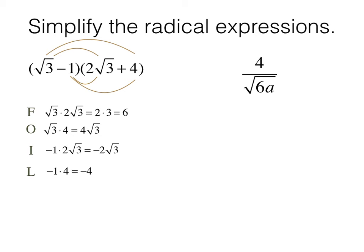Now what we do is we add these partial products, and we get 6 minus 4, thinking of like terms, plus 4 root 3 minus 2 root 3. We'll combine our like terms here, and we get 2 plus 2 root 3.